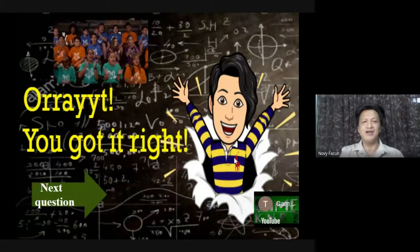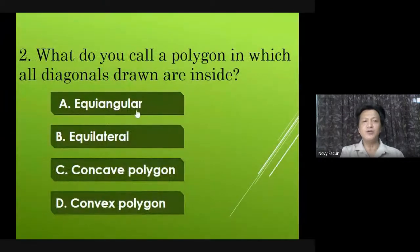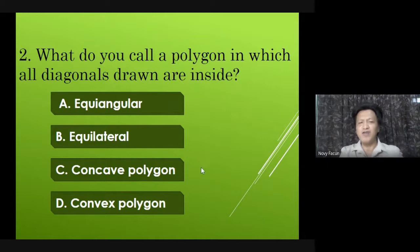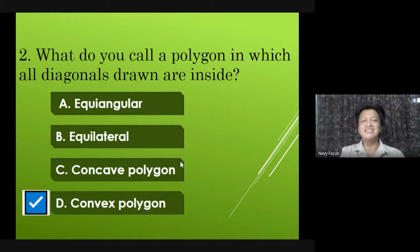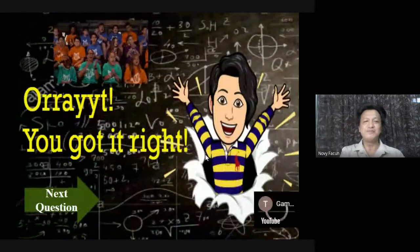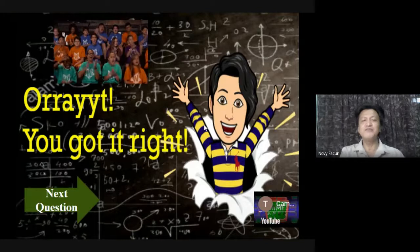Next, number two: What do you call a polygon in which all diagonals drawn are inside? Very good, faster. Yes, Sophia — that is correct, that is letter D, convex polygon. You got it right.